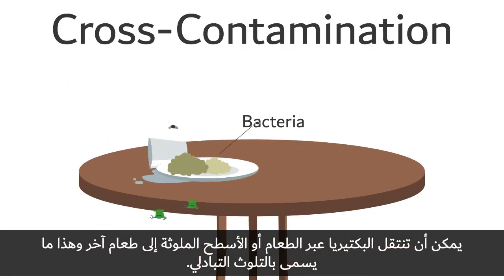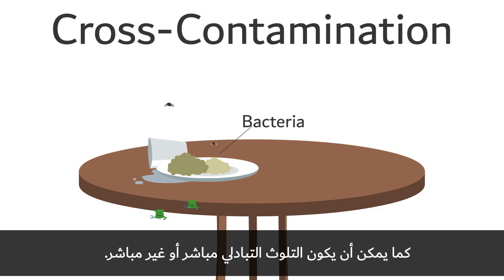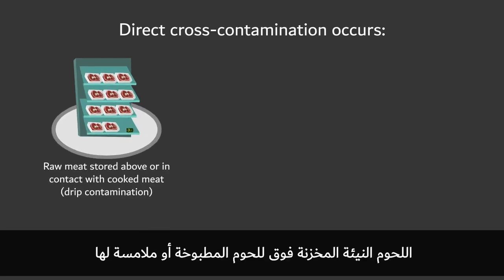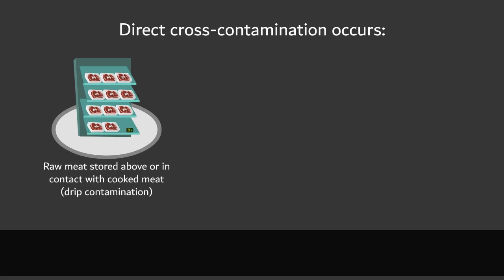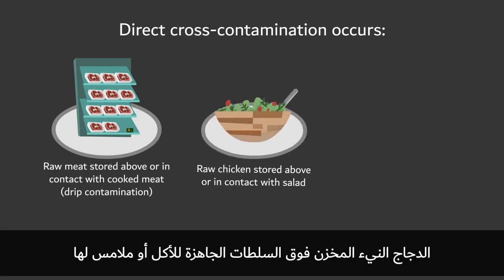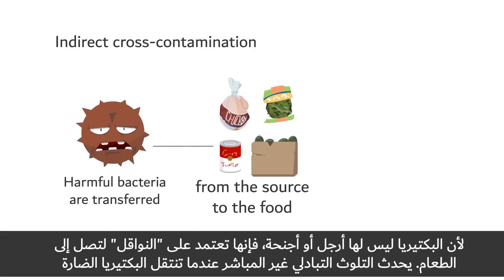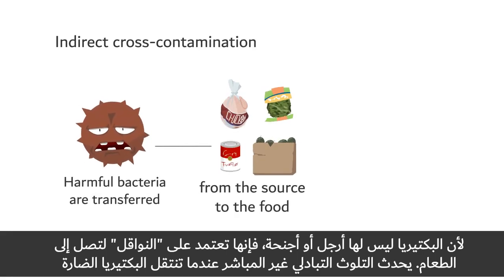Bacteria can be transferred from contaminated food or surface to another food, and this is called cross-contamination. Cross-contamination could be direct or indirect. Direct cross-contamination occurs in food where there is direct contact between the source of the bacteria and food. Examples include raw meat stored above or in contact with cooked meat, or raw chicken stored above or in contact with salad, or a food handler sneezing or coughing onto food. As bacteria have no legs or wings, they rely on vehicles to transfer them onto the food.